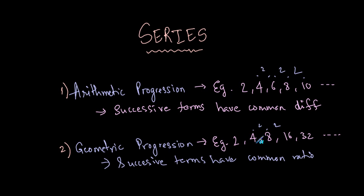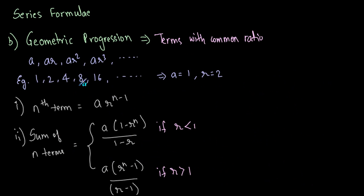For example, in this sequence, the common ratio is 2. Each term is multiplied by 2 in order to get the next term. Here, 2 is multiplied by 2 to get 4, which is again multiplied by 2 to get 8, and so on. The ratio is the same — take any two consecutive or successive numbers.